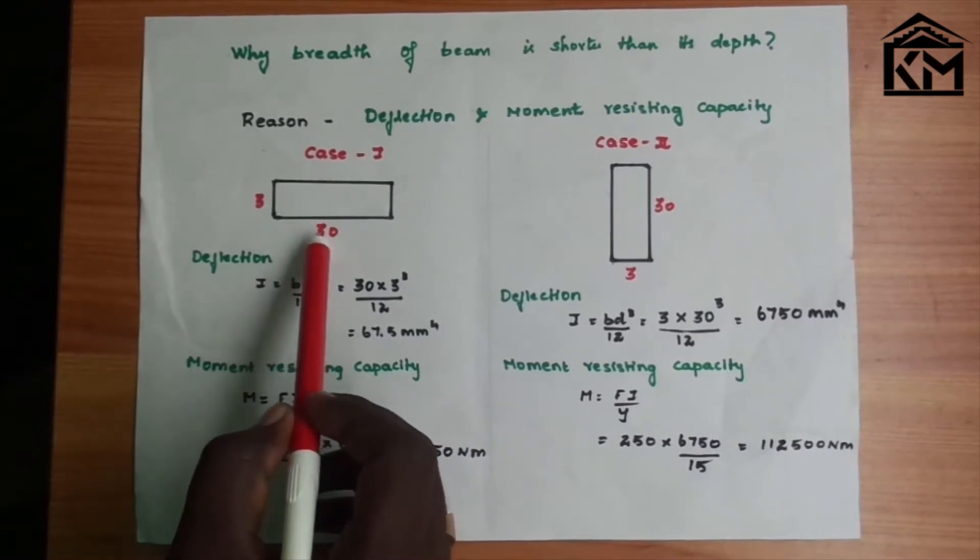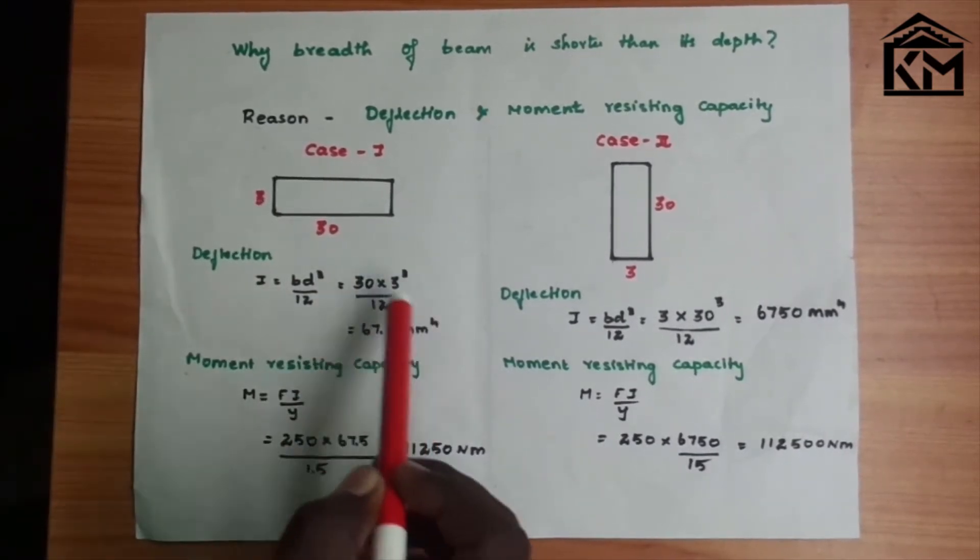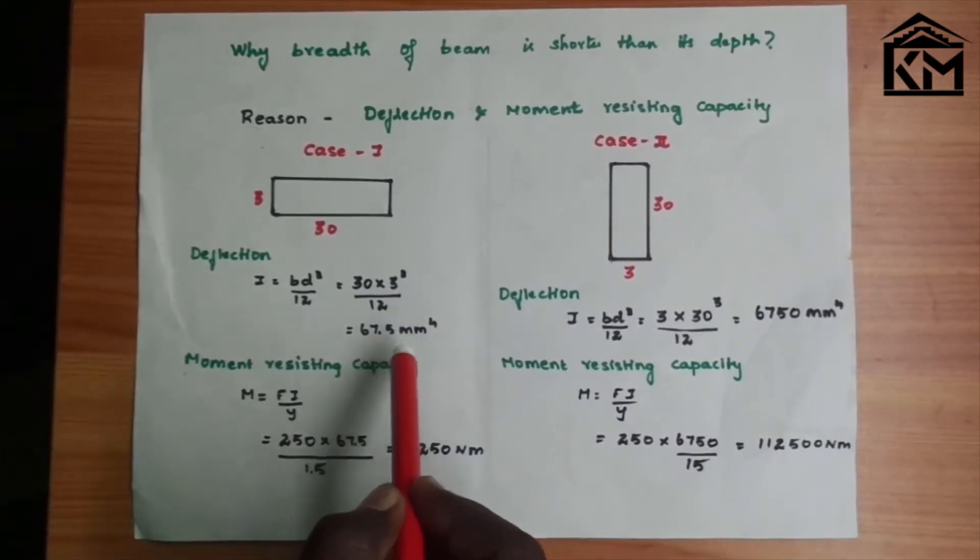So b we have breadth 30, D depth is 3. When you derive this, we have 67.5 mm to the power 4.